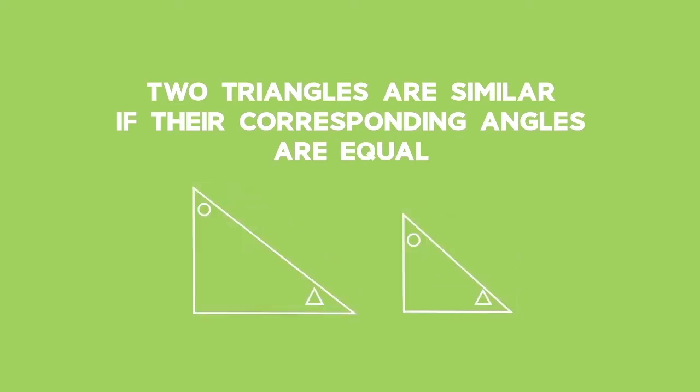Similar triangles. Two triangles are similar if their corresponding angles are equal.